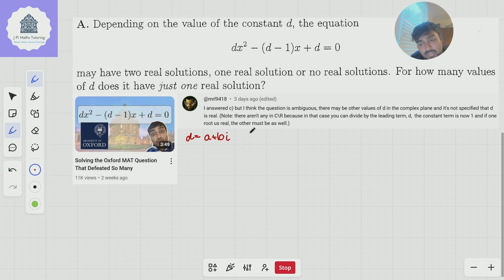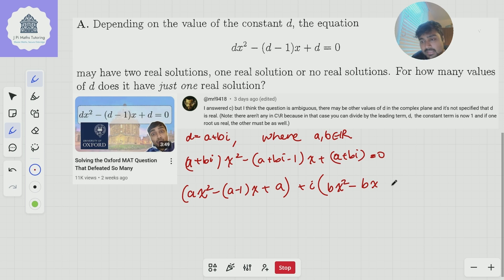So let's say d is a plus bi, where a and b are real numbers. Well, if I just substitute that into here, I get (a + bi)x squared minus (a + bi minus 1)x plus (a + bi) equals 0. And if I just kind of separate the real and imaginary parts, I get (ax squared minus (a minus 1)x plus a) plus i times (bx squared minus bx plus b) equals 0, like so.